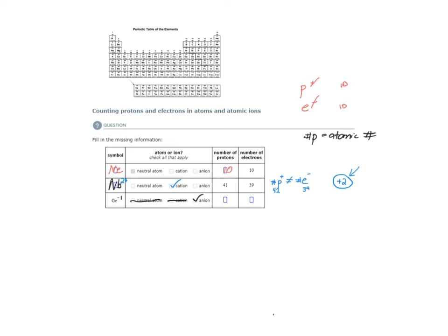So how many protons and electrons do we have in this case? Let's start with protons. Because this is germanium, the number of protons will never change, even if this is an ion. The number of protons is always going to be equal to the atomic number for germanium. Germanium has atomic number 32, which means I have 32 protons. Since this is an ion with a net charge of minus 1, that means I must have one more electron than I have protons. I have 32 protons, so I must have 33 electrons.